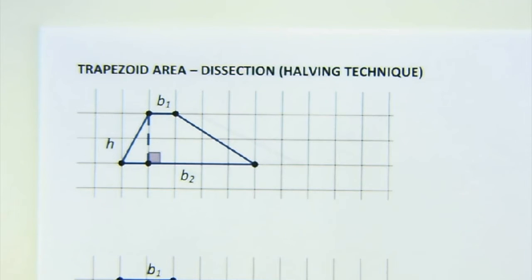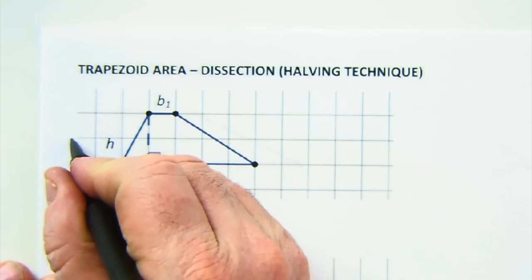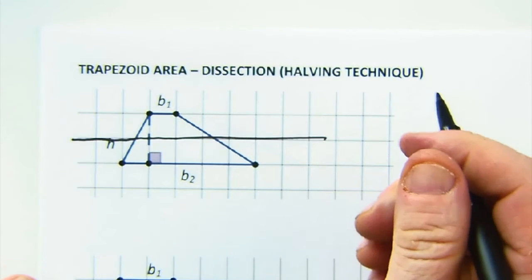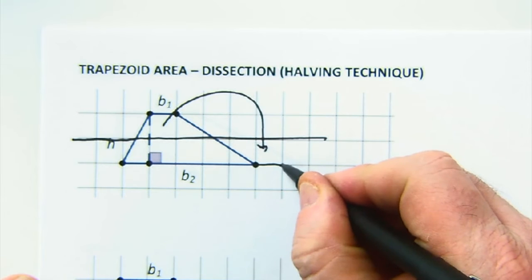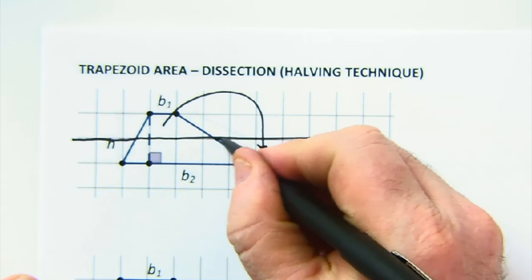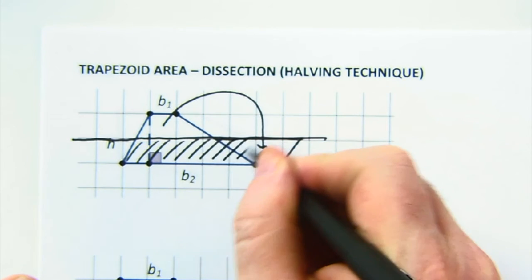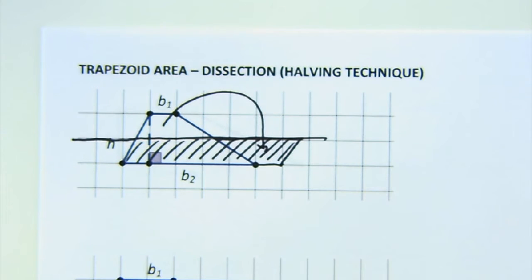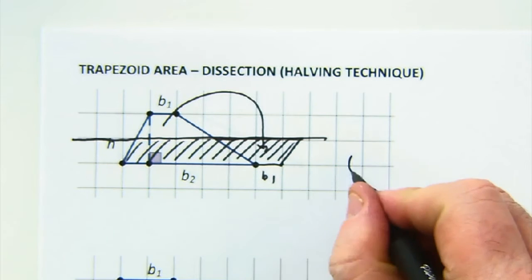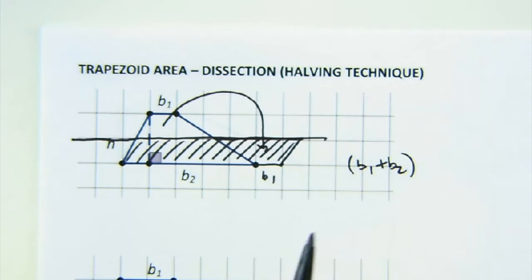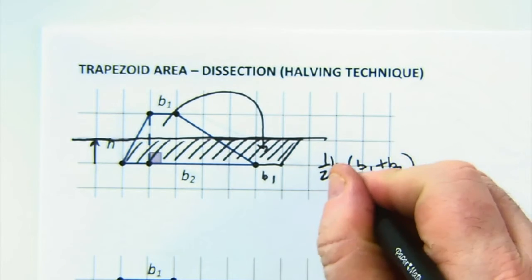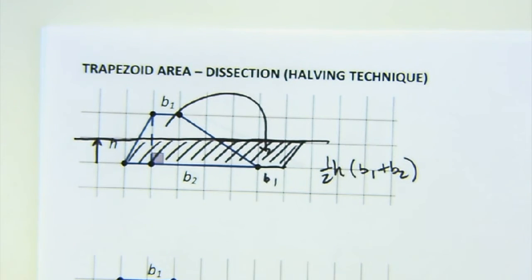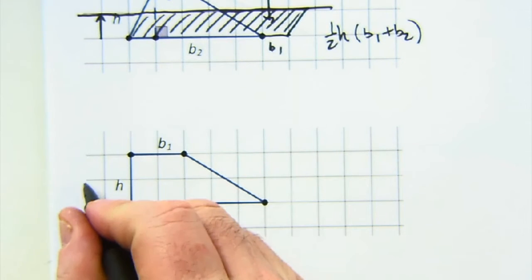The second technique is dissection — cutting up and moving pieces around. I'm going to cut the trapezoid in half vertically, take this piece, and drop it right into this spot. Notice: I didn't make any new area, I just cut it in half and flipped it over. I made a parallelogram. The parallelogram has a base of (b1 + b2) and a new height that is exactly half of the original height h. So: one half times (b1 + b2) times h.